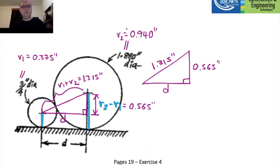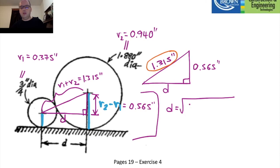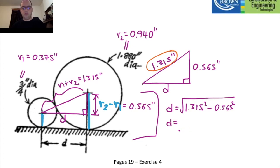The longest side is 1.315 inches. Using the shortcut: if the unknown d is not the longest side, put a minus sign. So d = √(1.315² − 0.565²) = 1.187 inches, which is the final answer for the horizontal distance between the two contact points of the circular rollers and the horizontal surface.